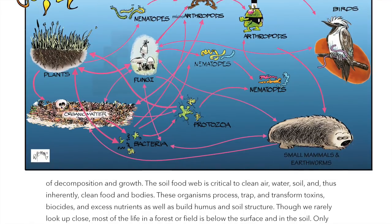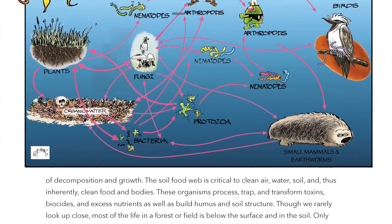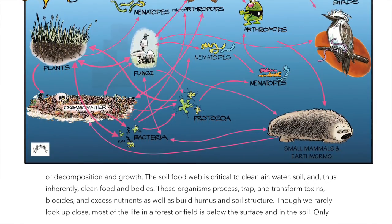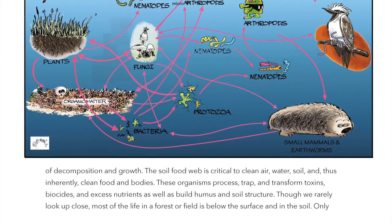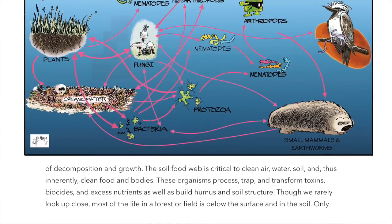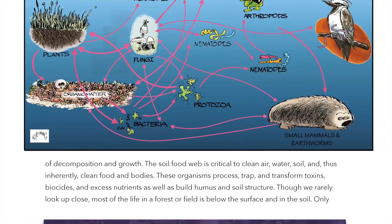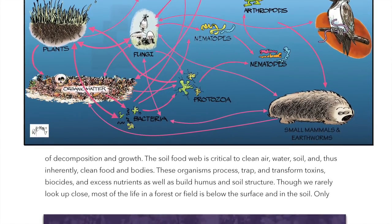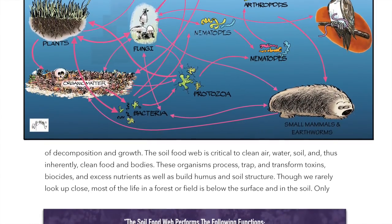These organisms process, trap, and transform toxins, biocides, and excess nutrients, as well as build humus and soil structure. Though we rarely look up close, most of the life in a forest or field is below the surface and in the soil.